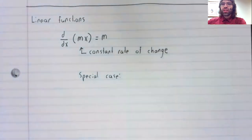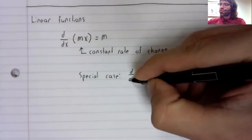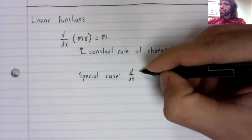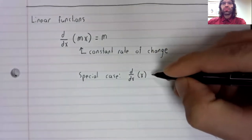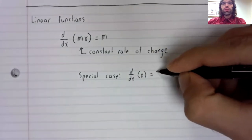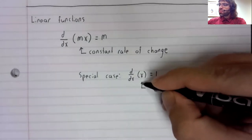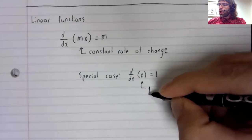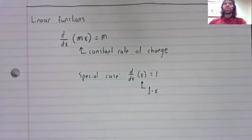Let's state a special case of this. The derivative of x is 1, since x is 1 times x.